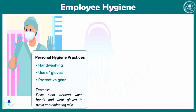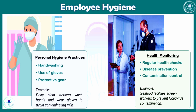Another aspect of employee hygiene is health monitoring — regular health checks ensure employees do not bring diseases into the production environment. For example, seafood facilities screen their workers to prevent Norovirus contamination, which is especially a concern in marine seafood.